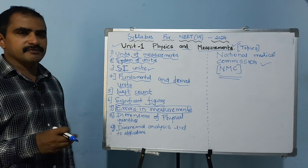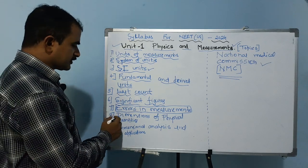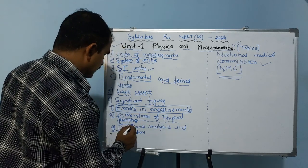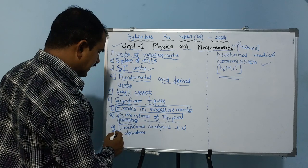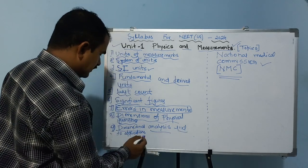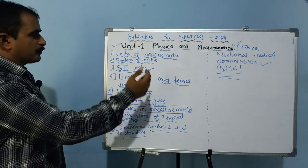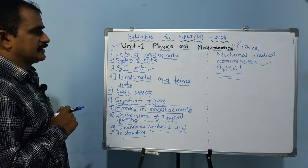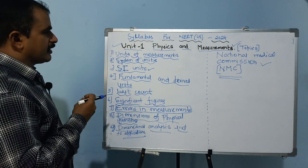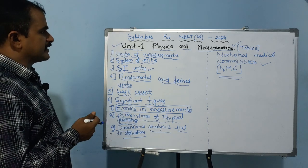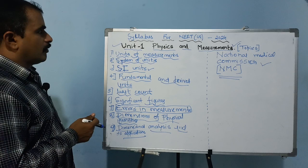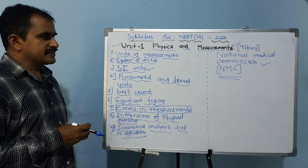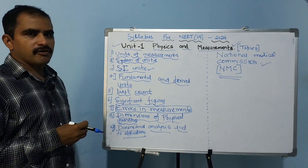Under errors, you should cover absolute error, relative error, and percentage error. Next, dimensions of a physical quantity are included for board exams as well, along with dimensional analysis and its applications. These are the topics included in Unit 1: Physics and Measurements for NEET. The next video will cover Unit 2: Kinematics. Thank you for watching.